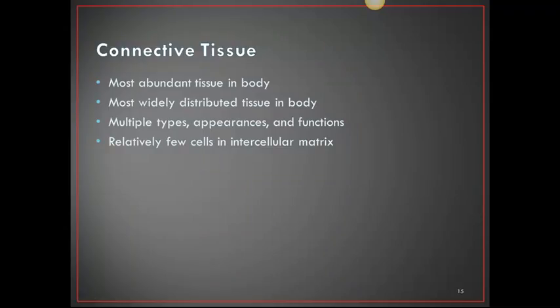Connective tissue is the most abundant and most widely distributed tissue in the body. It has multiple types, appearances, and functions, and relatively few cells in the intracellular matrix. Examples of connective tissue include skin, membranes, muscles, bones, nervous tissue, and all internal organs.